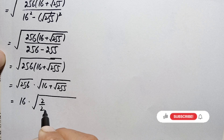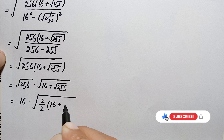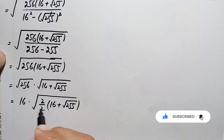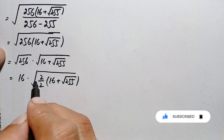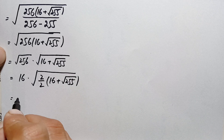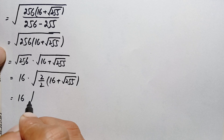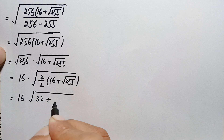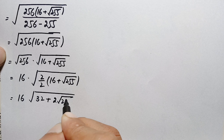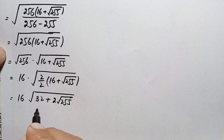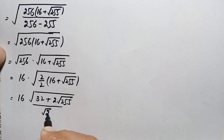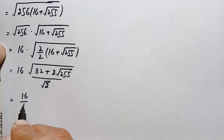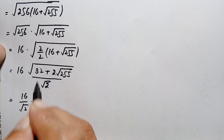Here we can write this expression as square root of 2 divided by 2, times 16 plus square root of 255. I multiply and divide by 2 with this number. Multiplying 2 inside, this becomes 16 times square root of 2 times (16 plus square root of 255), divided by square root of 2.